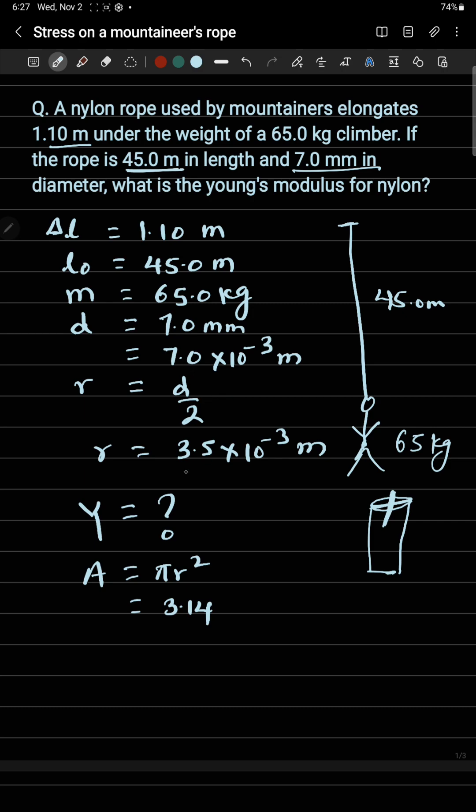The radius of this rope is right here, so I can write down 3.5 times 10 to the power minus 3 squared. Let me calculate this: 3.14, which is the value of pi, times 3.5 times 10 to the power minus 3 squared.